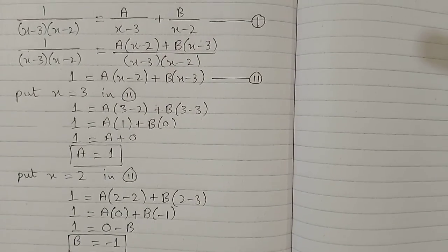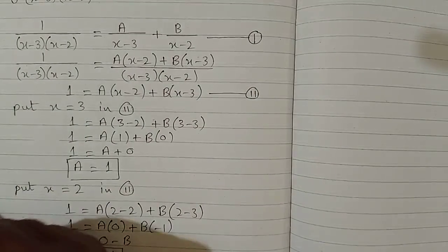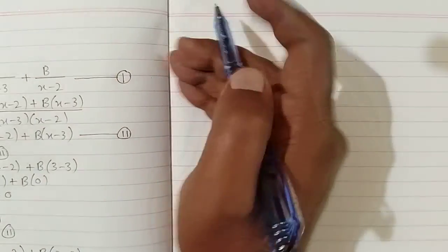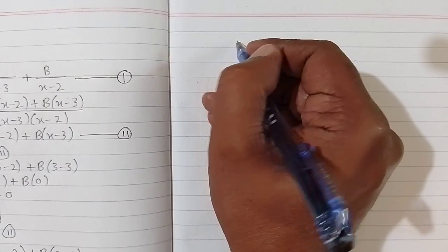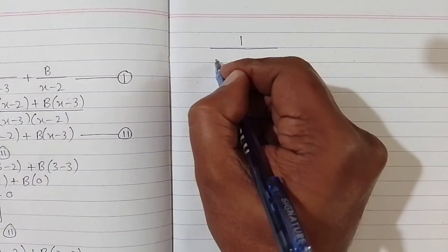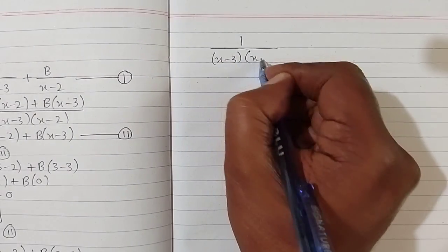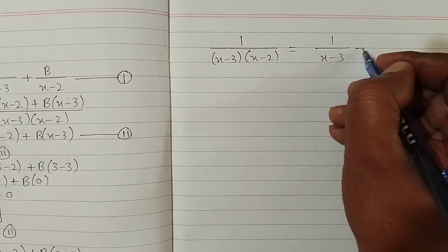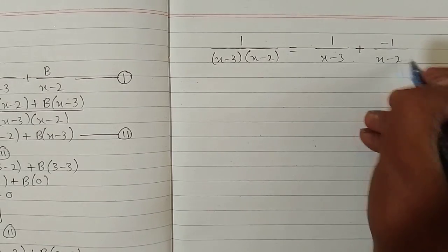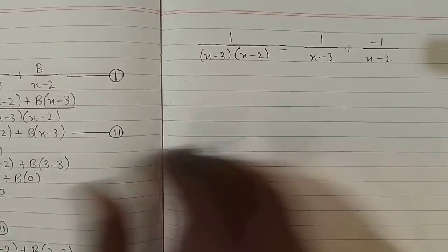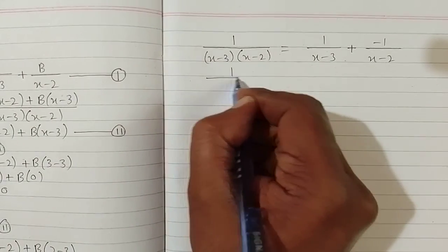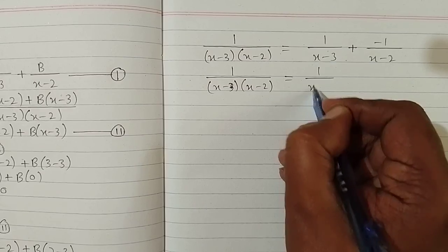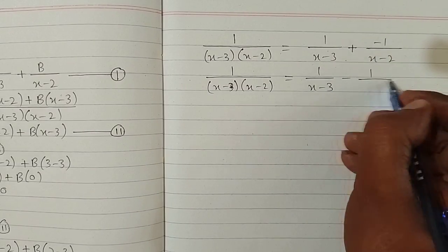Now we put these values back into the first identity. So we have 1 upon (x minus 3)(x minus 2) is equal to 1 upon (x minus 3) plus (minus 1) upon (x minus 2). That is, 1 upon (x minus 3)(x minus 2) equals 1 upon (x minus 3) minus 1 upon (x minus 2).